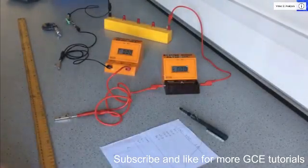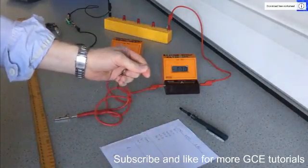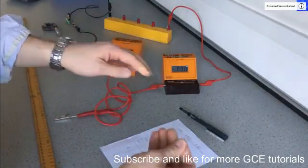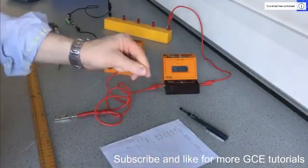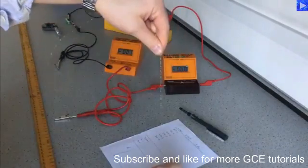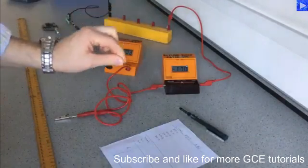This is an experiment to determine the resistivity of a metal wire. This is the wire that I will be using to take measurements for. It's a wire made out of a metal called Constantine. It's very thin, so you should be able to see it with the paper as a background there. That's the wire.